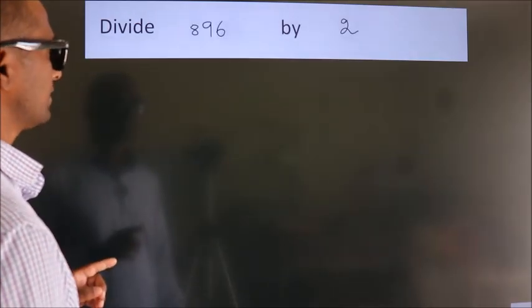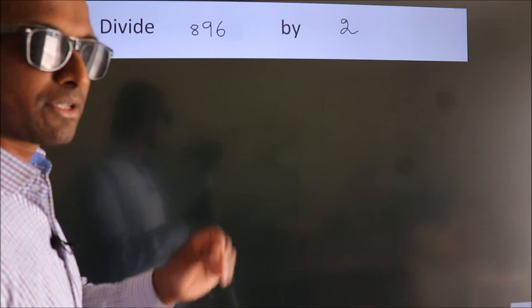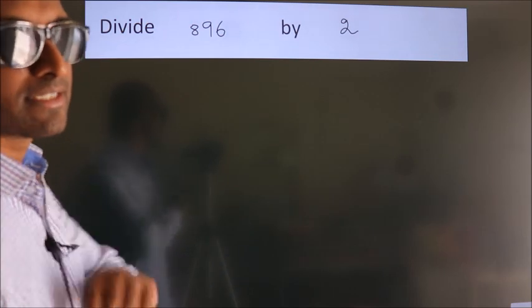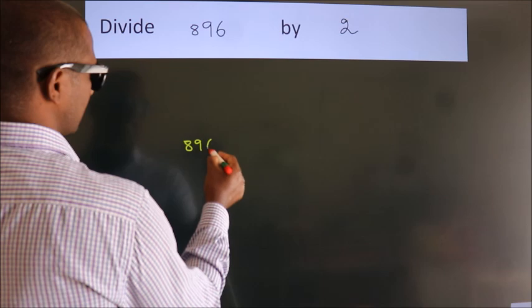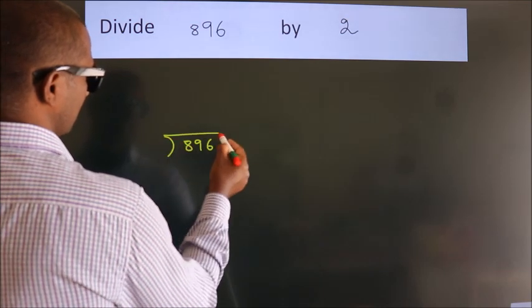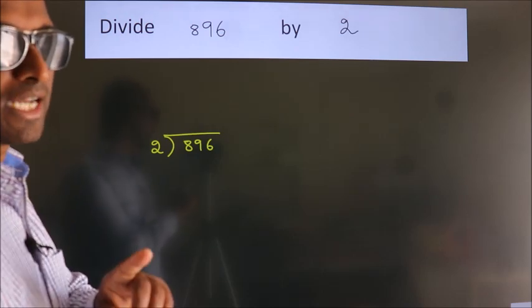Divide 896 by 2. To do this division, we should frame it in this way. 896 here, 2 here. This is your step 1.